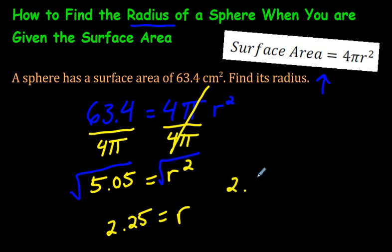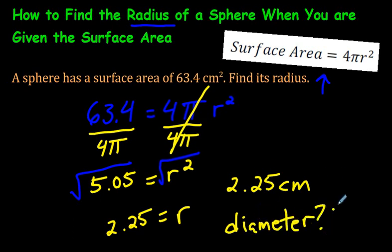You should write it in a sentence if you were doing it on a test, but it would be 2.25 centimeters is the radius. And if they ask the diameter, what if they ask the diameter, all you would have to do is double that number. So 2.25 times 2, the diameter would be 4.5 centimeters.